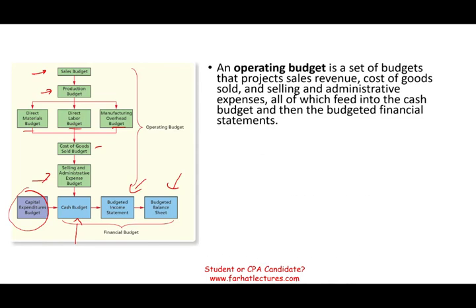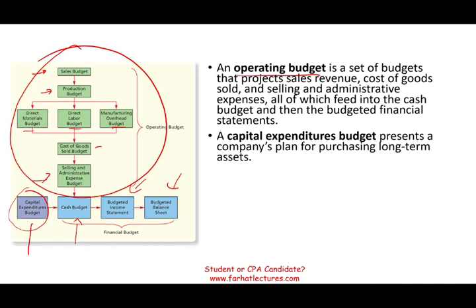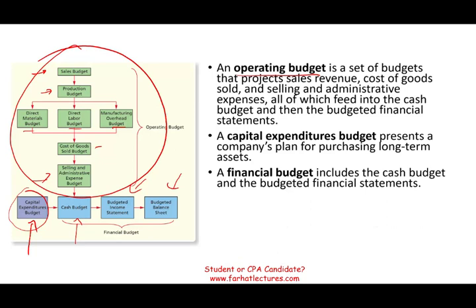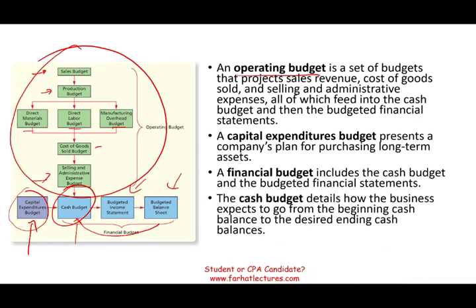An operating budget includes sales, cost of sales, and selling and administrative — that's going to feed into the cash budget. The capital expenditure represents how much we are going to purchase in property, plant, and equipment. The financial budget includes the cash budget, and everything feeds into the cash budget. Then the cash budget feeds into the income statement and the balance sheet, including the ending cash balance.